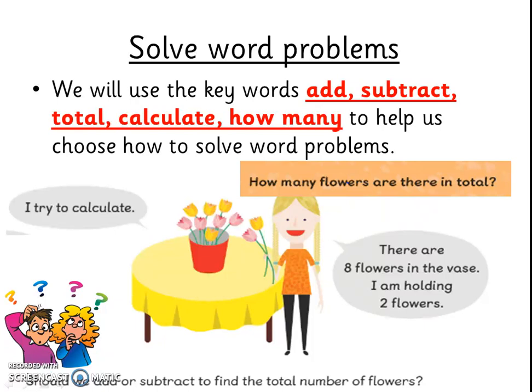First, we will use keywords such as add, subtract, total, calculate, and how many more to help us decide how to solve a problem. In this question, we are being asked to work out how many flowers there are in total. We can see eight flowers in the vase and two flowers in the girl's hand. The words how many and total help us know to add eight and two to find the answer. Remember this: to find the total always means to add.